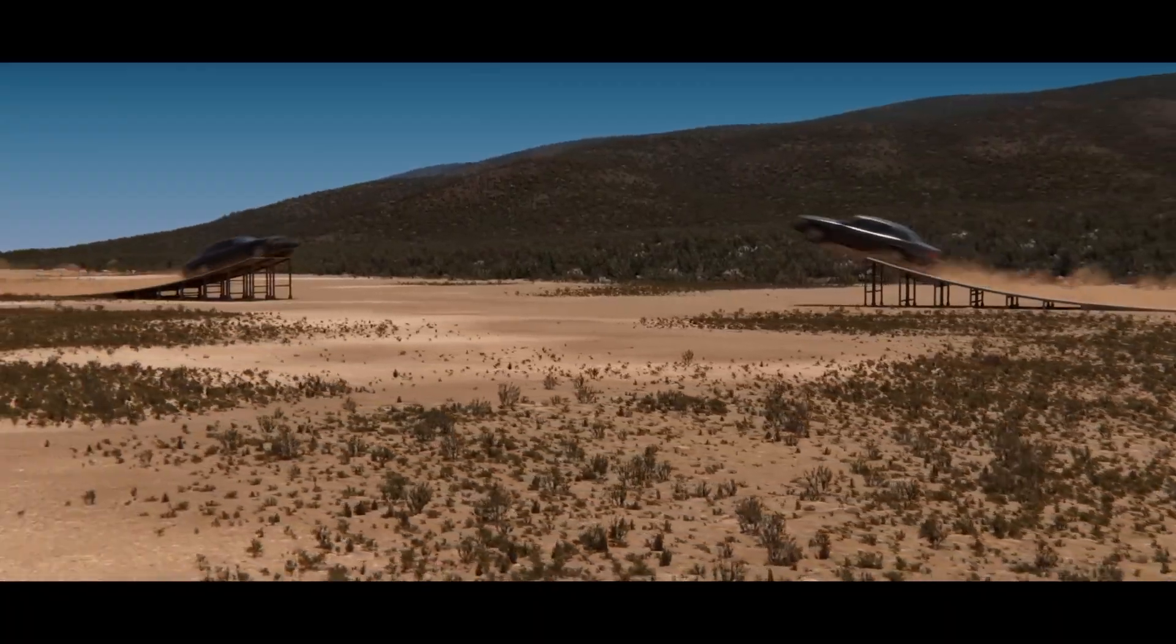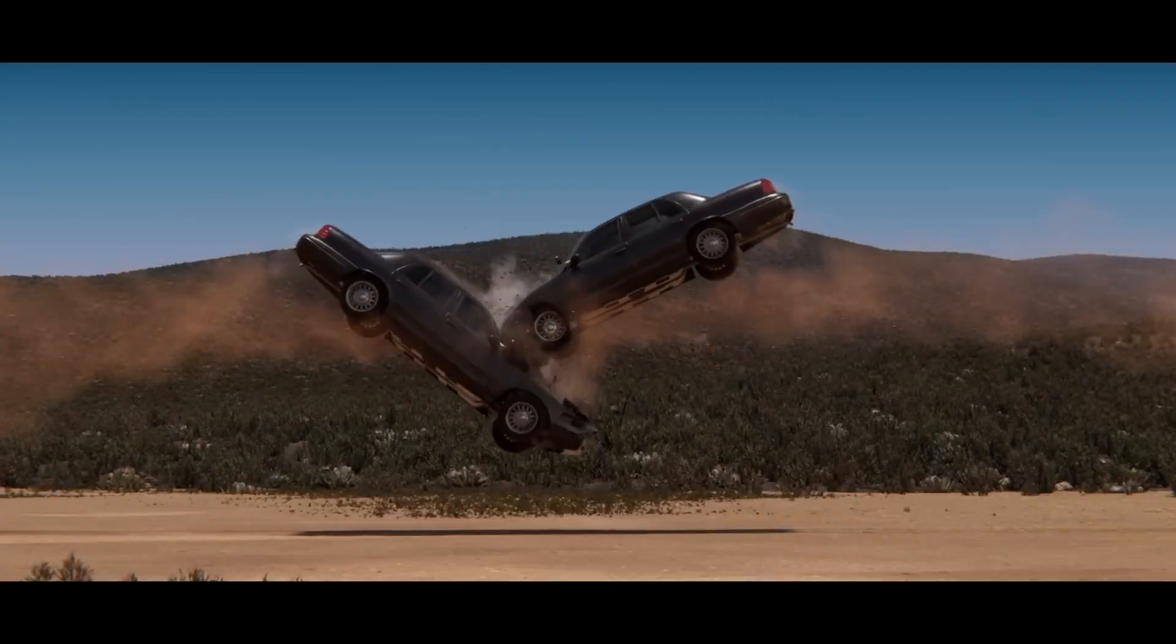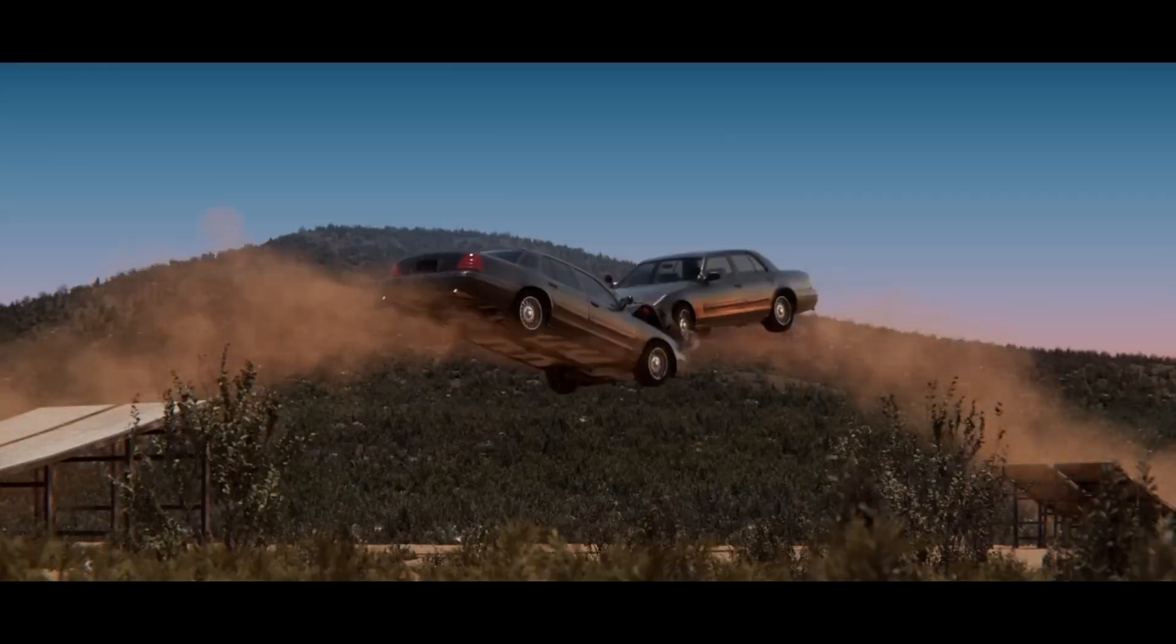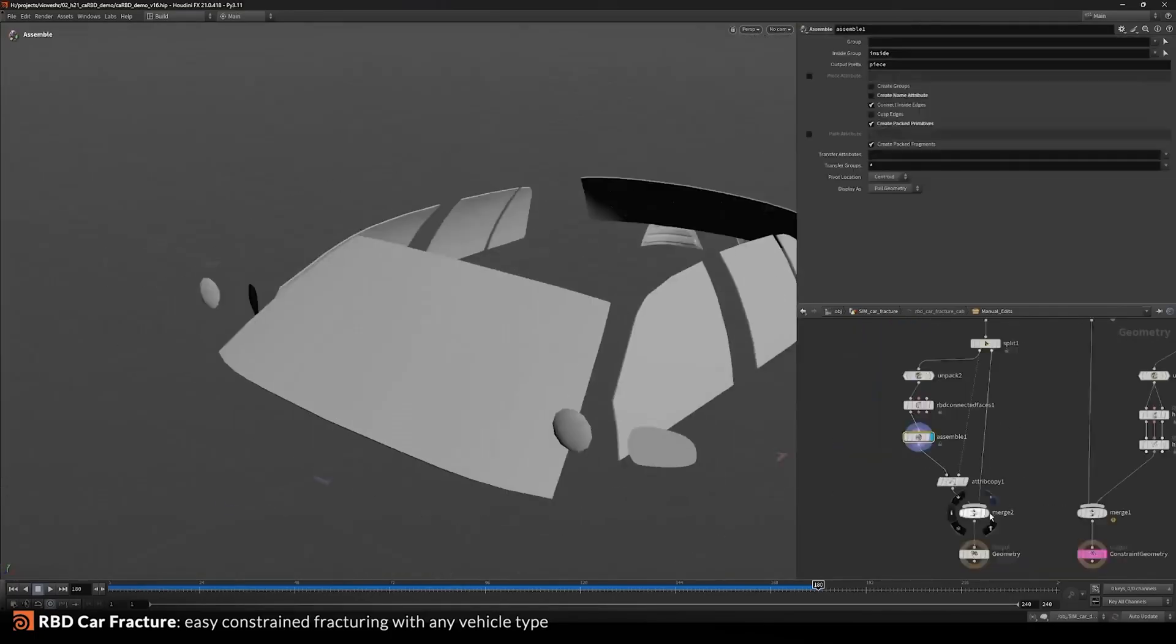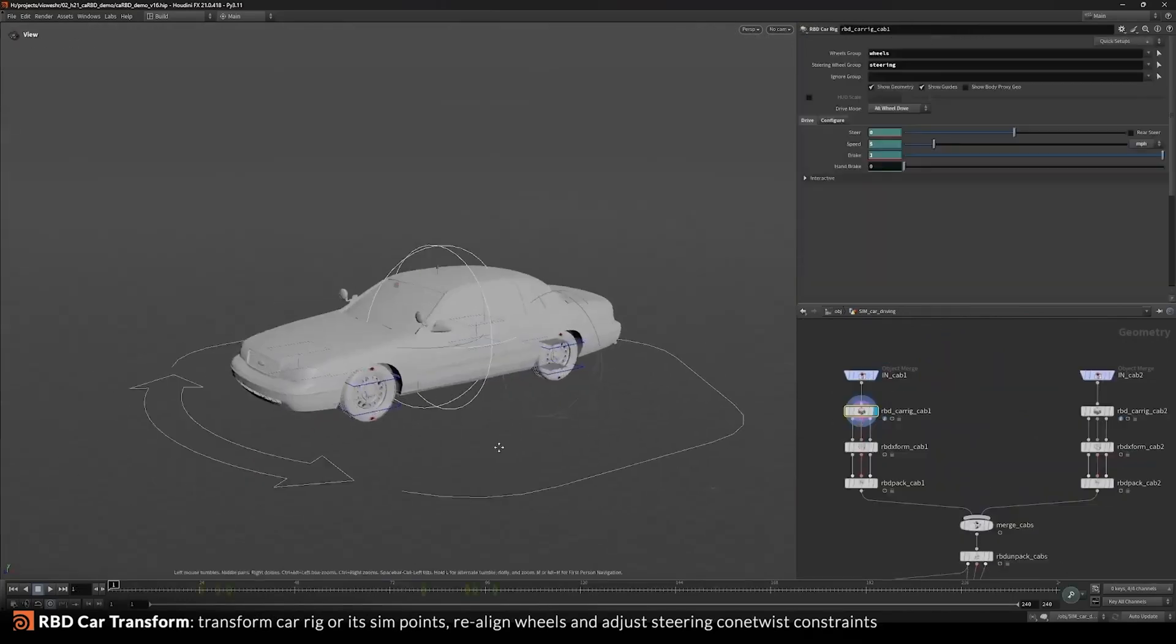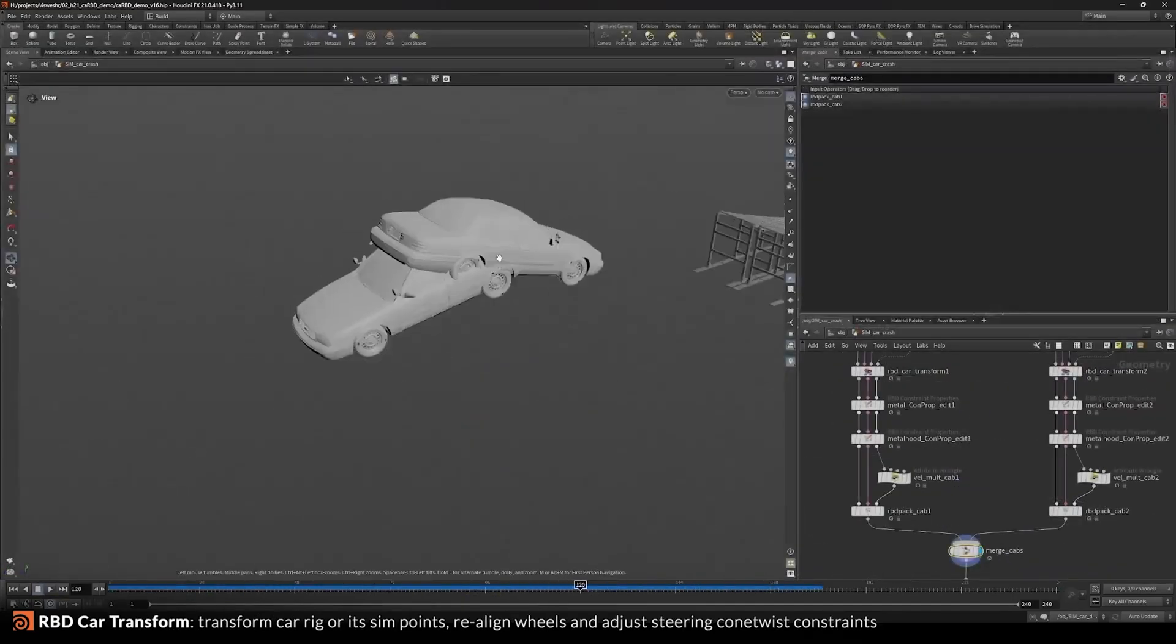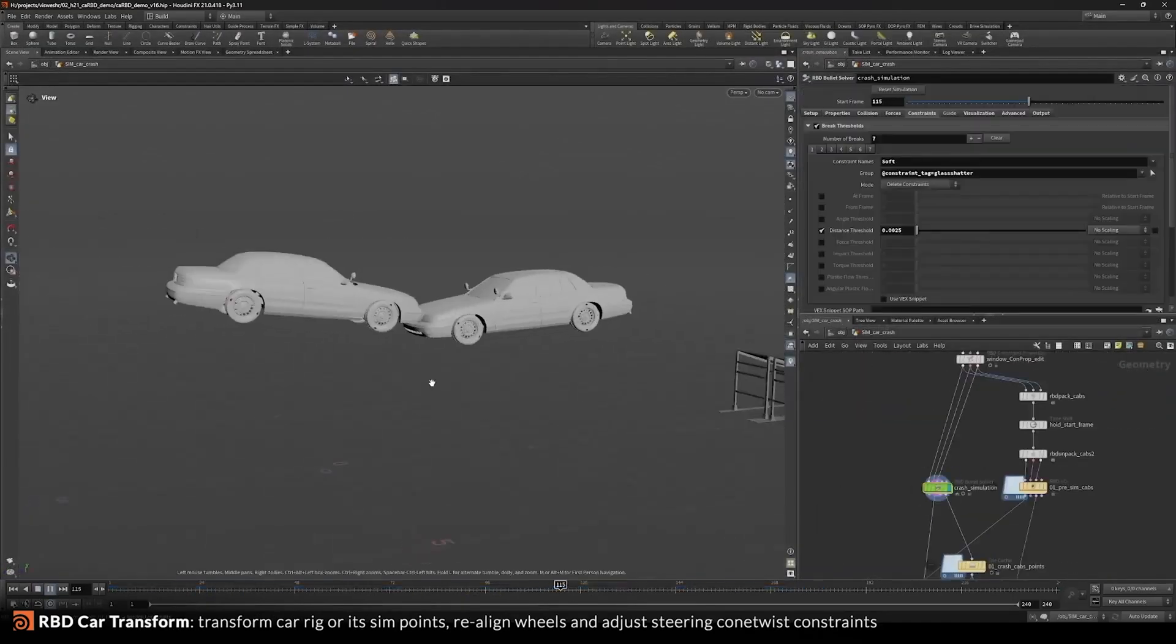When it comes to performance and pipeline enhancements, the PDG system gets new capabilities, including machine learning nodes for tasks like style transfer and denoising, support for exporting formats like GLTF, and overall faster execution of background tasks.